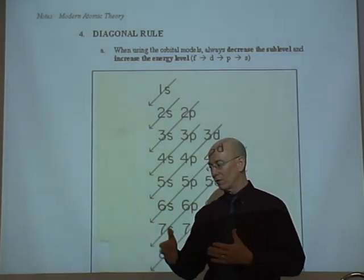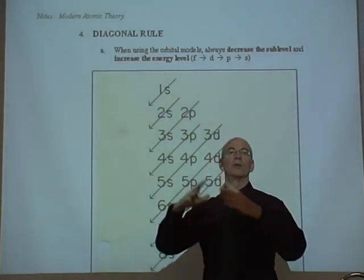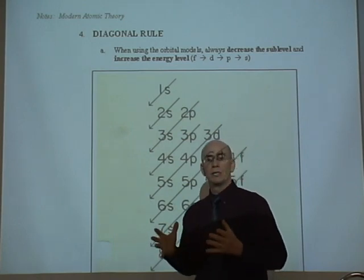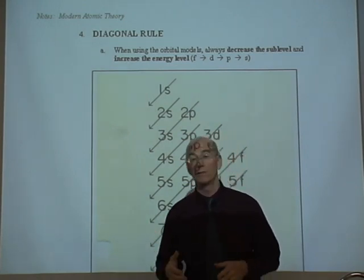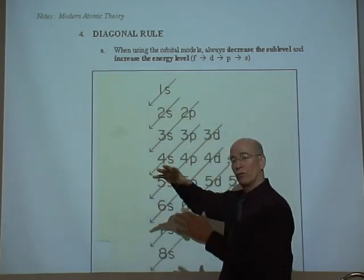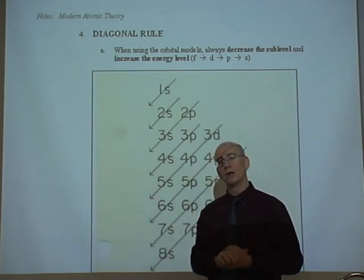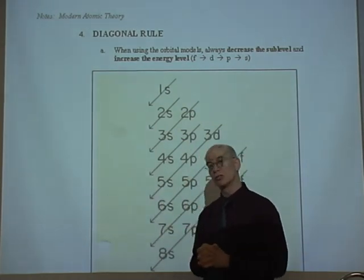So then how do we know the order of the energy levels and the sublevels when you put it all together? Let's say we take a very big atom like Mercury or even bigger, Uranium. How do we go through all the different quantum numbers and get them correct? Well, there's a neat little trick.